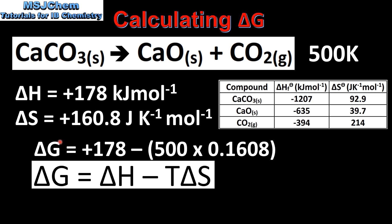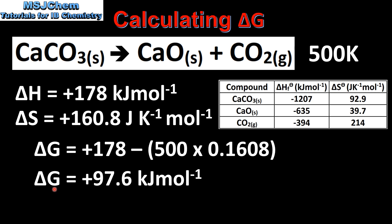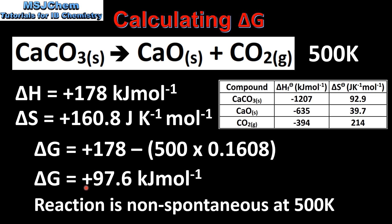I'm now ready to calculate the delta G for the reaction. Here we have the change in enthalpy, here's the temperature in Kelvin, and here we have the change in entropy converted to kilojoules. Because the change in enthalpy is measured in kilojoules and the change in entropy is measured in joules, we can either change the enthalpy to joules or the entropy to kilojoules. The change in entropy is in kilojoules, and when we do the calculation we get a value for delta G of positive 97.6 kilojoules per mole. Because the value for delta G is positive, the reaction is non-spontaneous at 500 Kelvin.